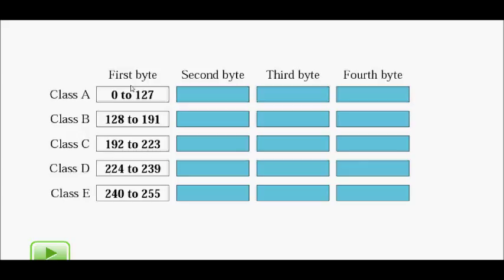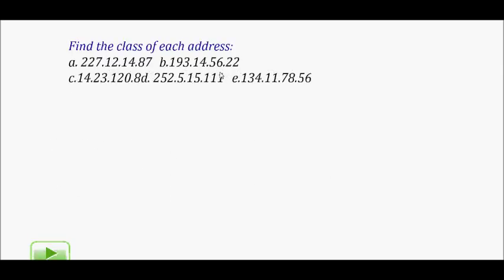In terms of dotted decimal ranges: class A spans 0 to 127 in the first byte, class B from 128 to 191, class C from 192 to 223, class D from 224 to 239, and class E from 240 to 255.